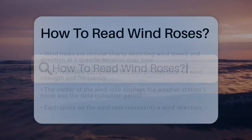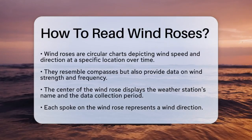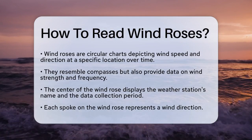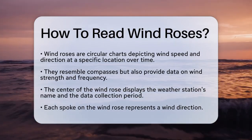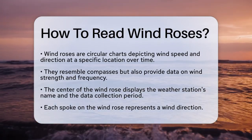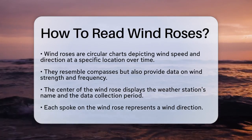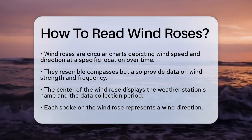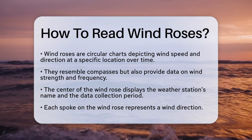How to Read Wind Roses. If you're curious about how to decipher those colorful circular diagrams known as wind roses, you're in the right place. Let's break it down step by step. A wind rose is essentially a circular chart that shows how wind speed and direction are distributed at a specific location over a certain period.